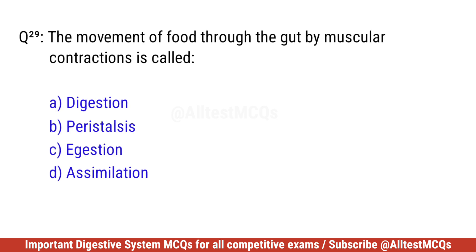Question twenty-nine. The movement of food through the gut by muscular contraction is called? Right option is B. Peristalsis.